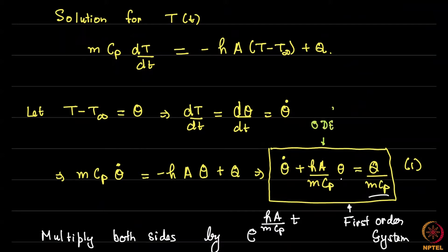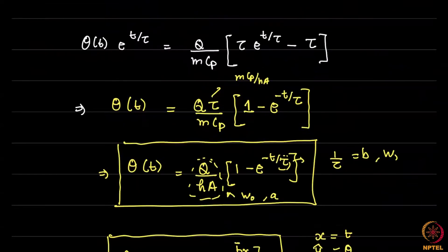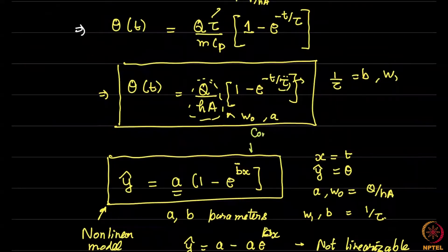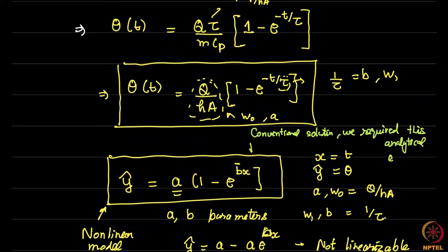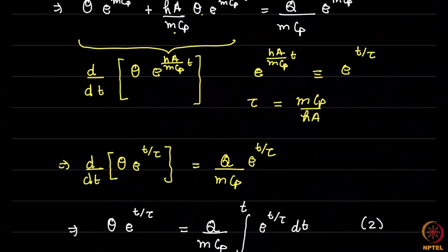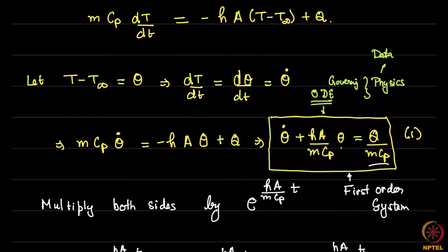The governing ODE is what we mean by the physics of the problem, and this physics itself we will use as data to solve the problem. For the conventional solution, the forward-model-based inverse problem required this analytical expression — the closed-form solution to the ODE. That solution came directly from knowing how to solve the ODE.